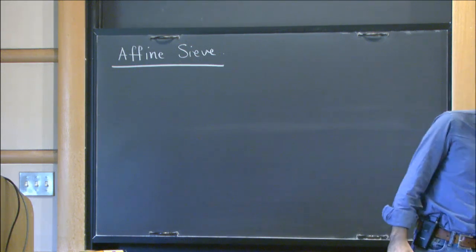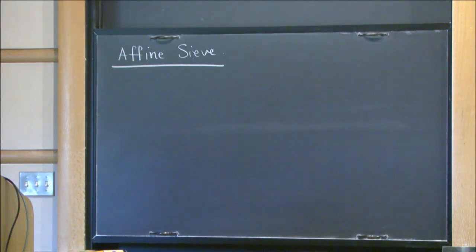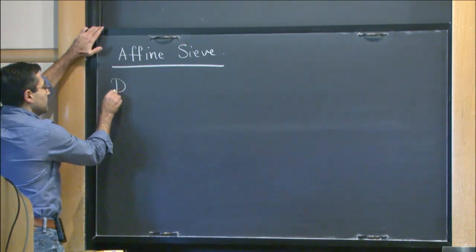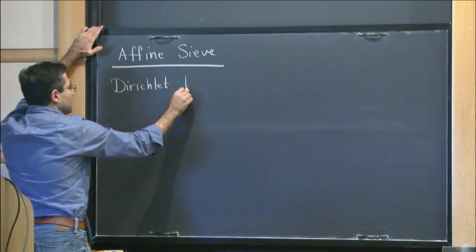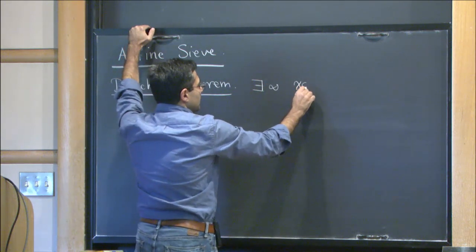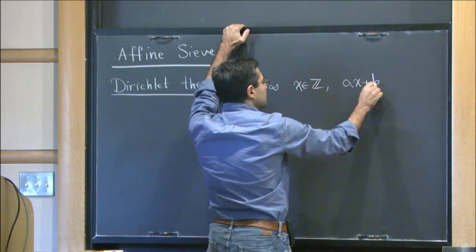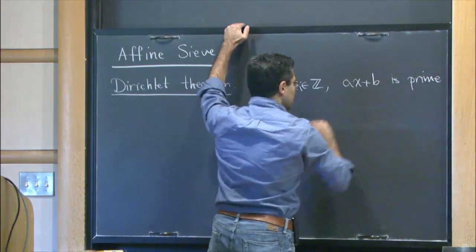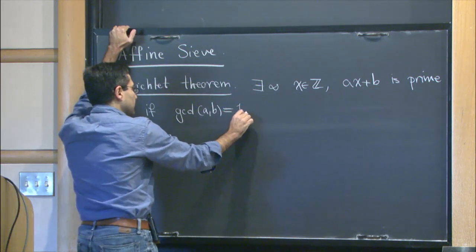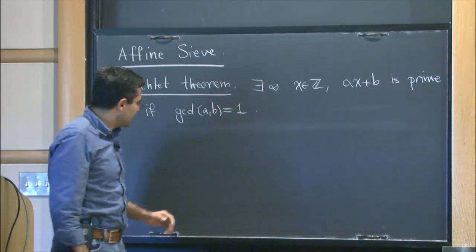Let me start with the historical point of view. There are lots of questions in number theory that ask for the existence of infinitely many primes in a sequence of one-parameter integers. Starting with maybe the birth of analytic number theory: Dirichlet's theorem. It says that there exist infinitely many x where ax plus b is prime if there is no local obstruction, meaning gcd(a, b) = 1.